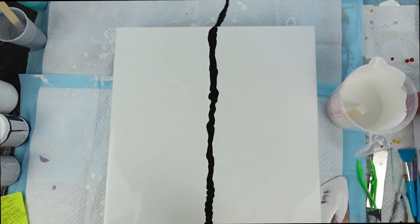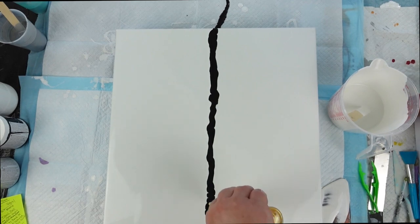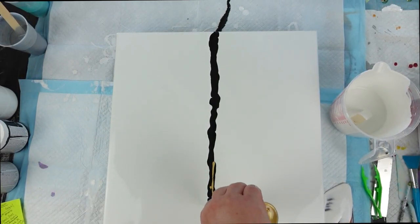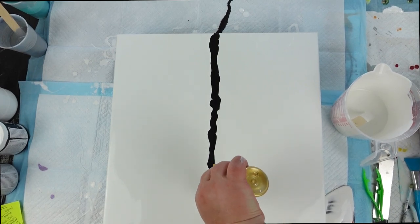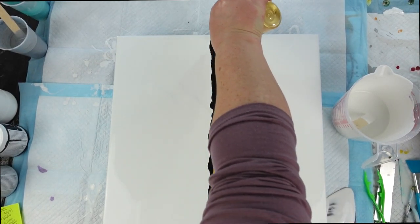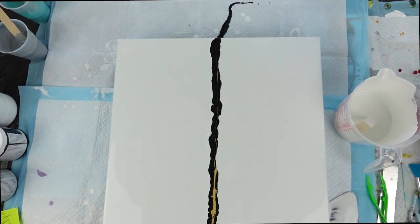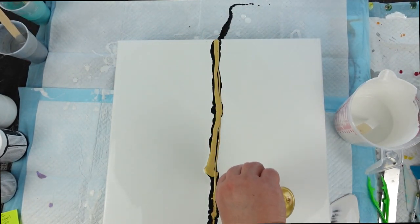Okay, so next up I'm going to come in with my gold, and I'm going to lay it—I'm actually going to be laying this down directly on top of my black paint here, and I'm going to lay my Iridescent Gold Fine.